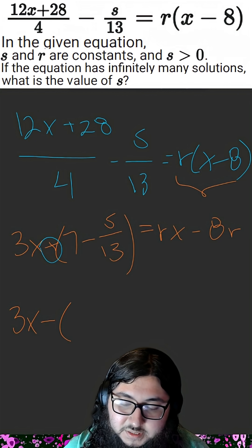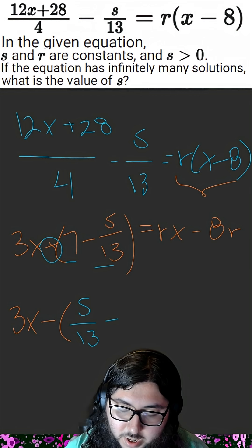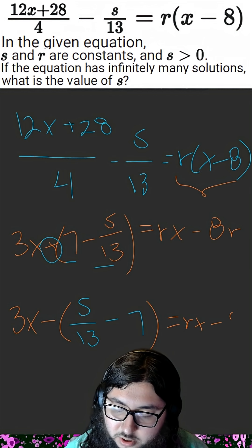All that does is change this plus sign to a minus sign, and flip the sign of all terms inside. So we have s over 13 minus 7. We flip the order, and this is still equal to rx minus 8r.